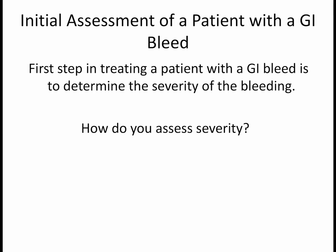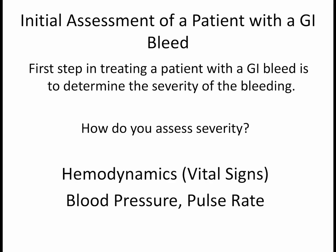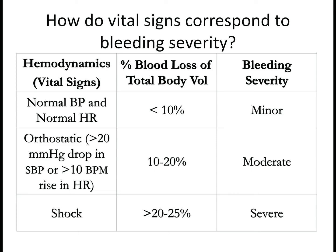For the initial assessment of a patient with GI bleed, the first step is to determine the severity of the bleeding by assessing hemodynamics — paying close attention to blood pressure and pulse rate. In GI, we classify bleeding as minor, moderate, or severe. Minor bleeding means less than 10% total blood volume loss, and these patients usually present with normal blood pressure and normal heart rate.